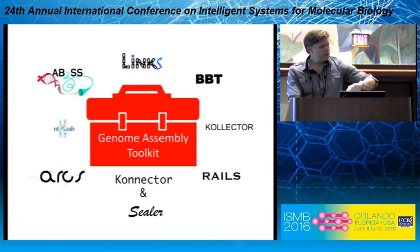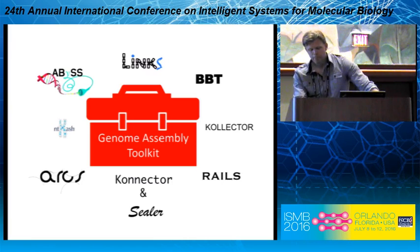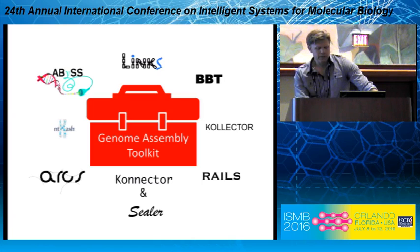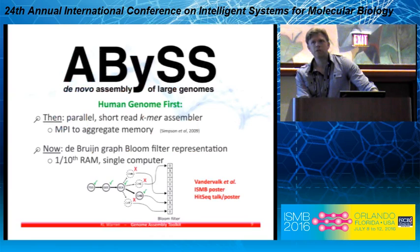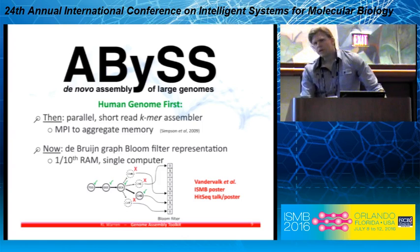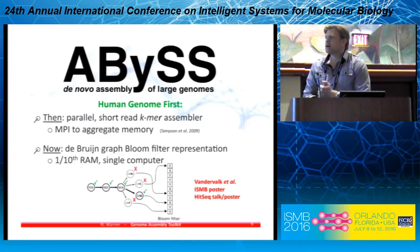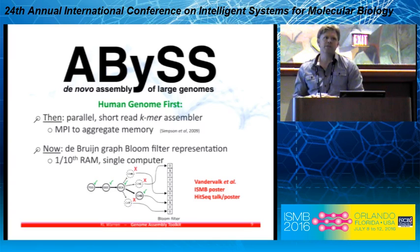The second half of my talk covers a genome assembly toolkit. Our lab develops bioinformatics technologies for genome assembly, and we have for numerous years now. You would undoubtedly have known ABYSS, which is our flagship software. ABYSS was the first genome assembler to assemble the human genome with short reads, and it did that by aggregating memory from multiple computers using a message-passing interface.